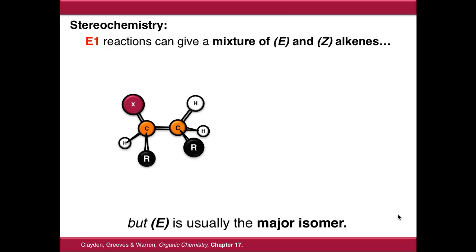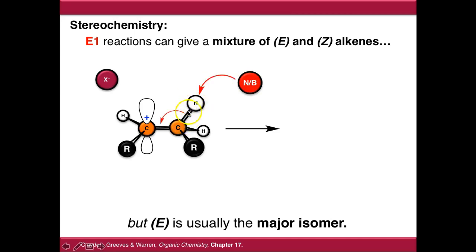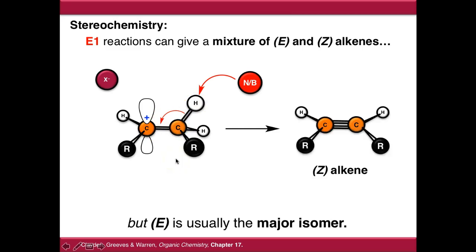In terms of stereochemistry, E1 reactions can give us a mixture of E and Z alkenes, although usually we get the E alkene as the major isomer. When we lose the leaving group, we end up with an SP2 hybridized carbocation with an empty P orbital. The nucleophile can remove a hydrogen from the adjacent carbon and push the electrons from that C-H bond onto the empty P orbital, forming the carbon-carbon double bond. As drawn, this substrate gives a Z alkene because the two R groups are on the same side of the molecule when the deprotonation occurs.